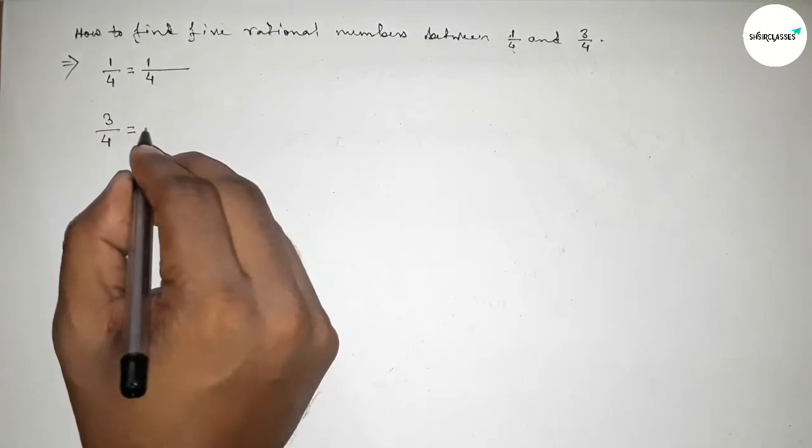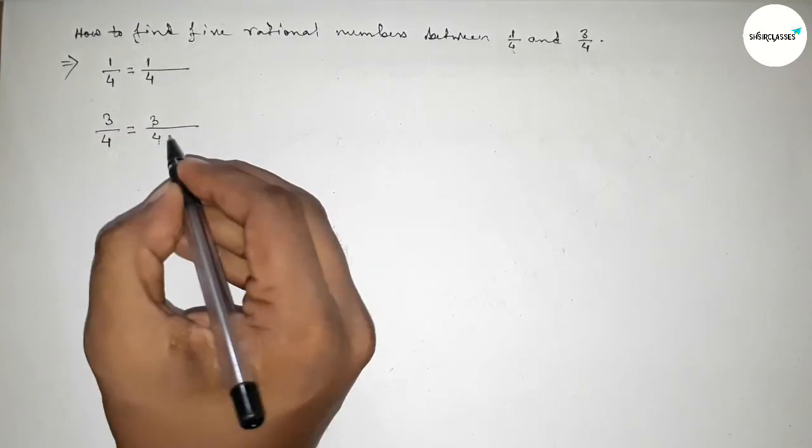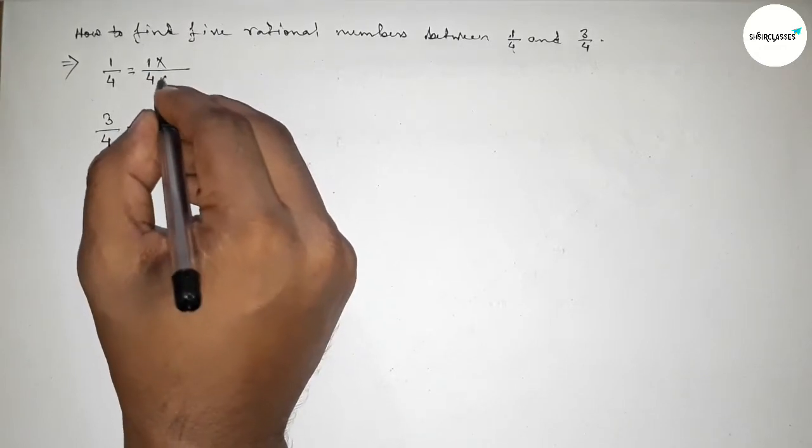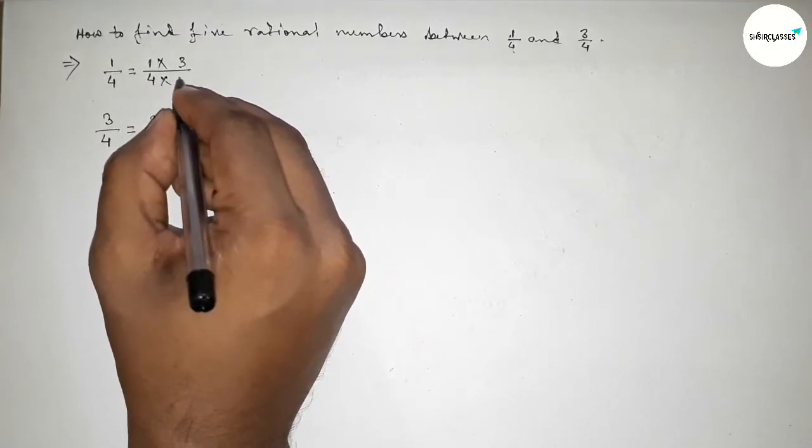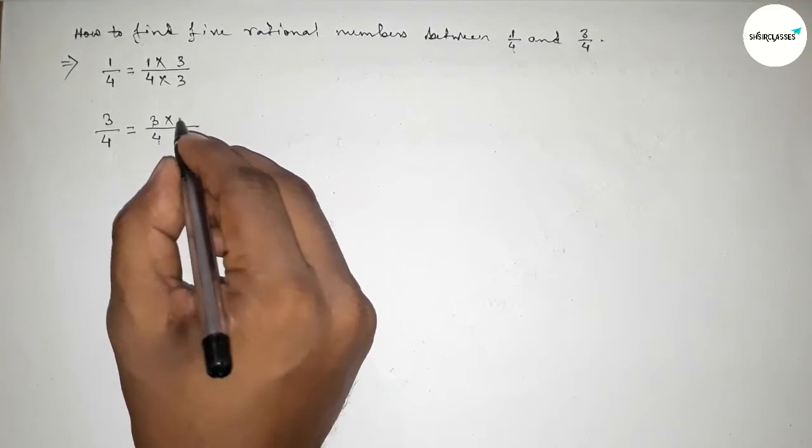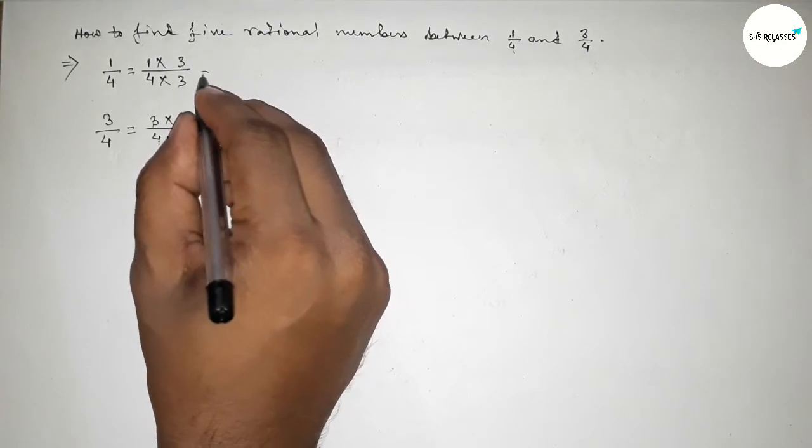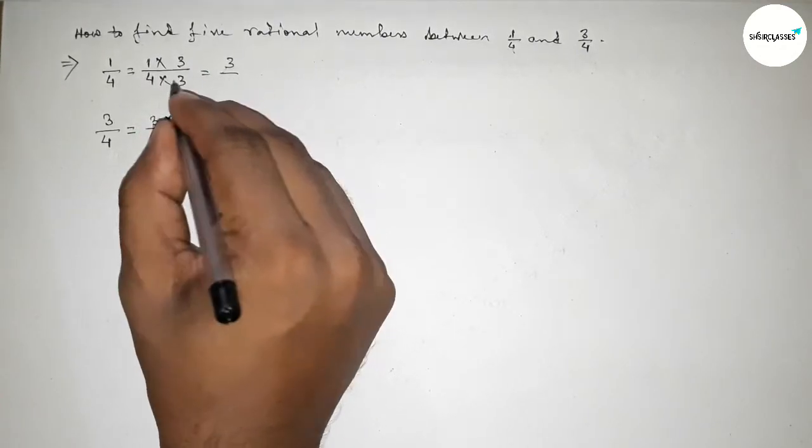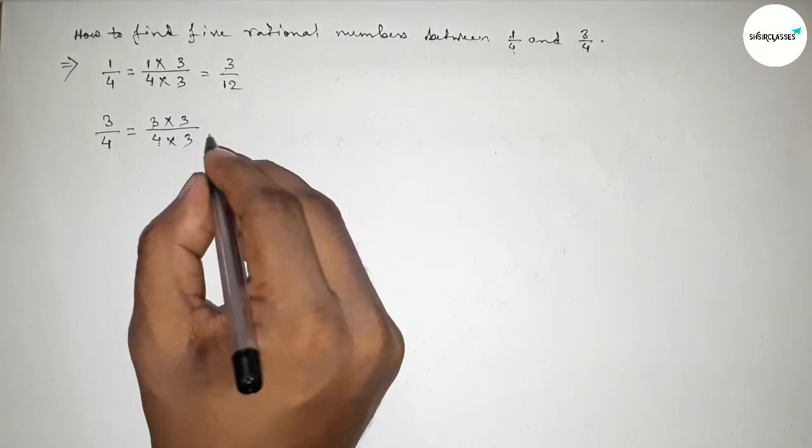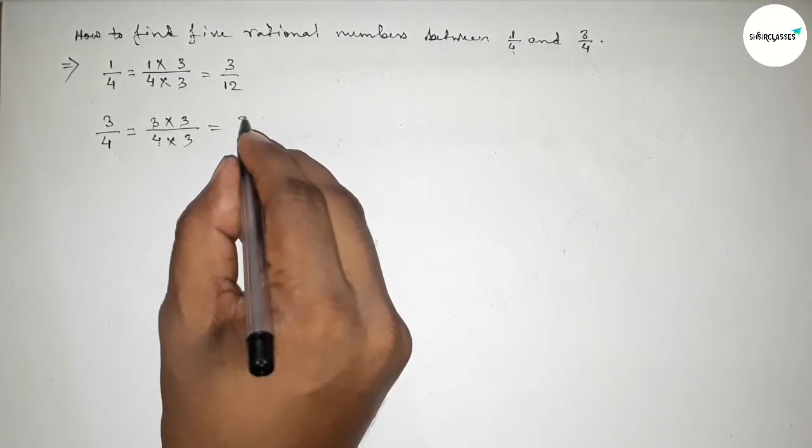We should multiply both numbers by a number, so here multiplying by 3 up and down, and here also multiplying by 3. So this is 3 over 12 and this one is 9 over 12.